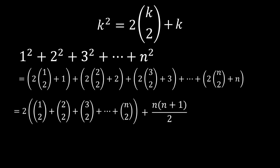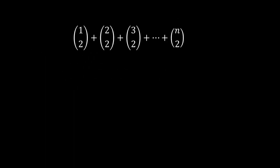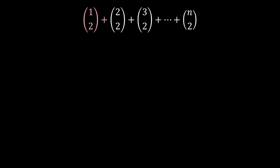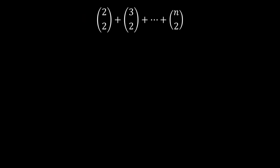Now our problem of finding the sum of n squares becomes finding the sum of these combinations. First, notice that 1 choose 2 is just 0 because there are 0 ways to choose 2 objects from 1, so we can cancel that term out. Let's write the sum out a bit more to see what is going on.